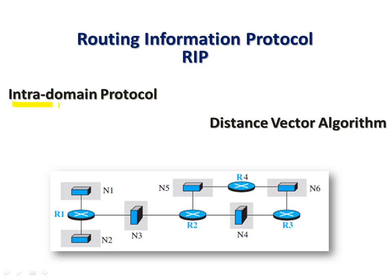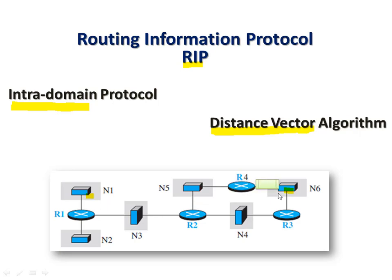RIP is a protocol implemented in intra-domain network systems — that is, inside an organization, between several autonomous systems. It handles how packets are transmitted from source to destination. RIP is an implementation of the distance vector algorithm, where we use the Bellman-Ford equation to find the shortest path.